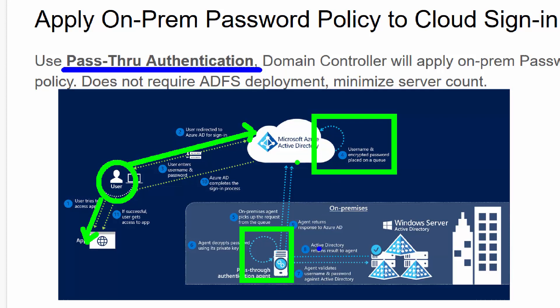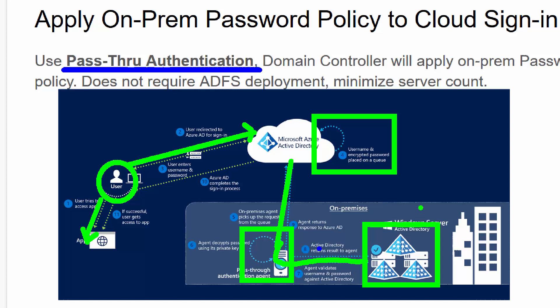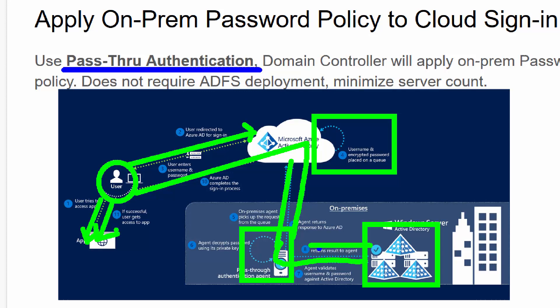There is a pass-through agent that constantly monitors the queue and passes it through to your on-prem domain controller — your on-prem Active Directory setup. With pass-through authentication, your domain controller is doing the verification, so any security policies you have set up as a domain policy will still be enforced. The Active Directory returns the results; the agent sends them back to Azure AD, which completes the sign-in by issuing a standard JWT token representing the user, presented to the website for access authorization.